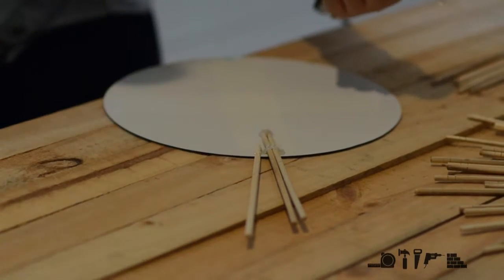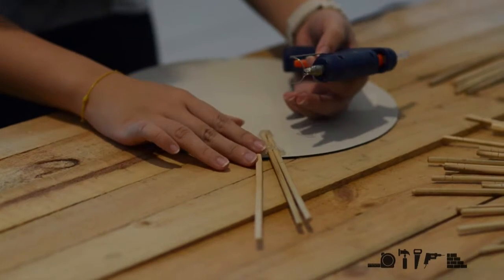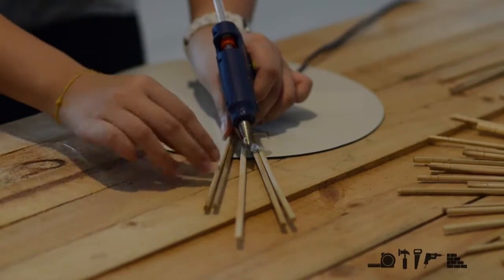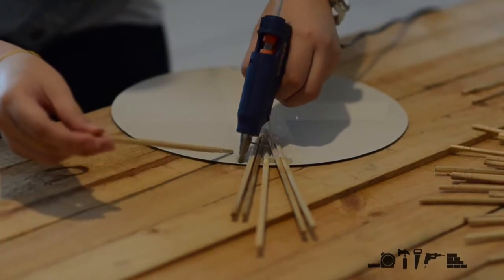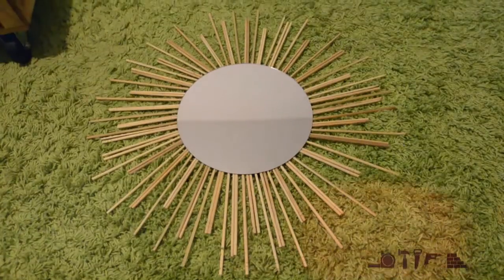Hold the chopstick for several seconds while the glue sets. Continue attaching chopsticks around the mirror until a full circle has been created.